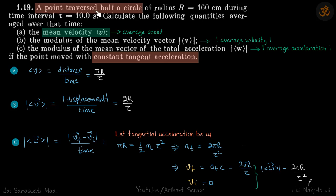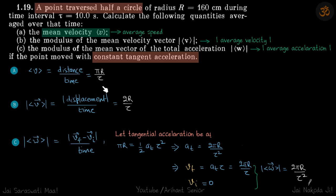A point is traversing a semicircle and we need to find the mean velocity — this means average speed — and also the magnitude of average velocity and magnitude of average acceleration, given the point moves with a constant tangential acceleration. First, average speed is distance divided by time. In a semicircle, distance is πr and time is τ, so the answer is πr/τ.